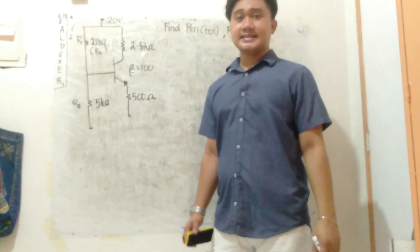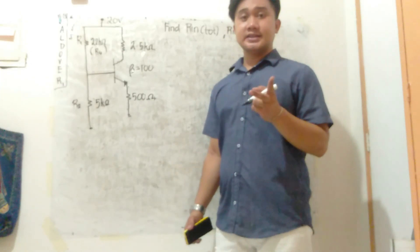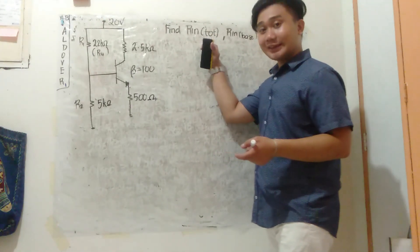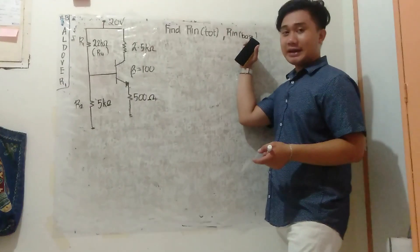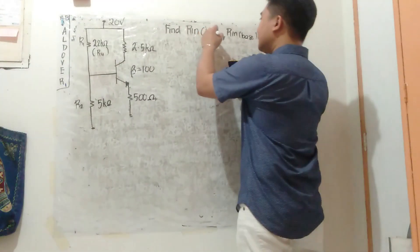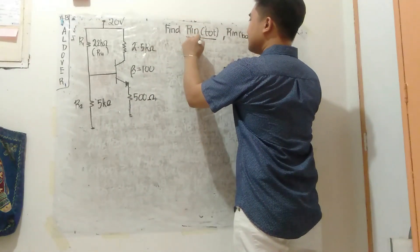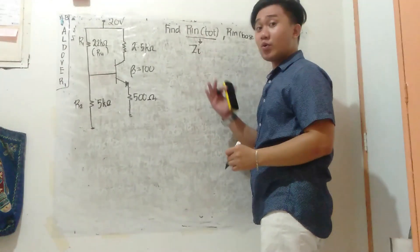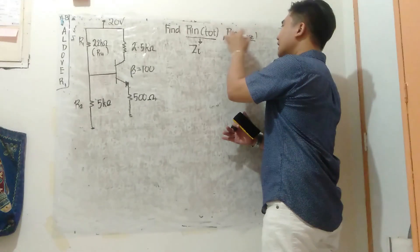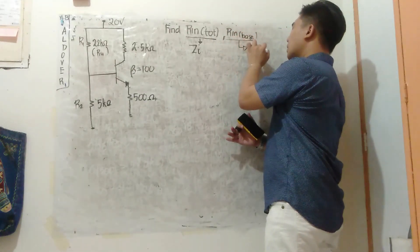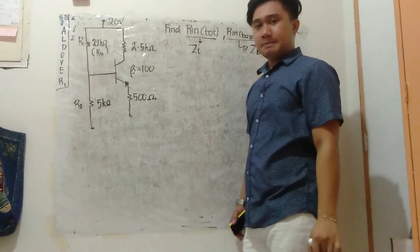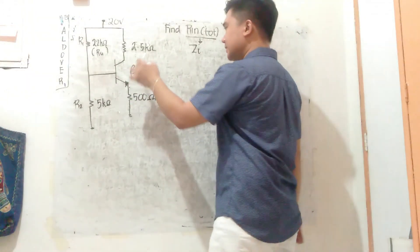Hello guys, this time we have two circuits, two questions to solve: R_in tot or R_in total and R_in base. R_in tot or R_in total is simply your ZI or your input impedance overall. While R_in base is just your ZB or impedance or equivalent impedance at the base. So let's start with formulas.